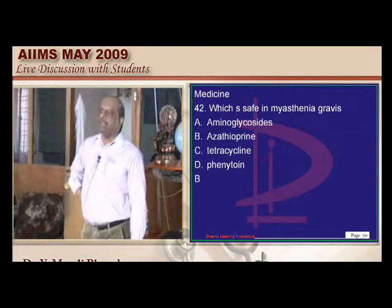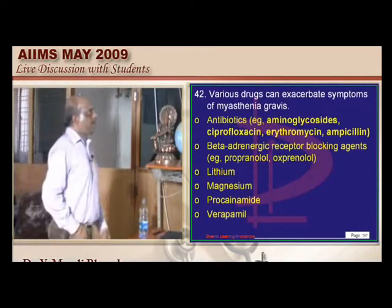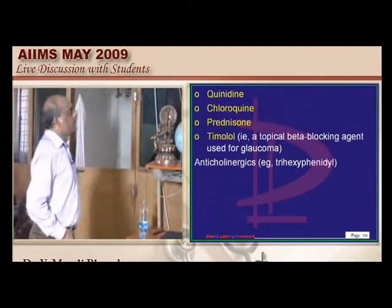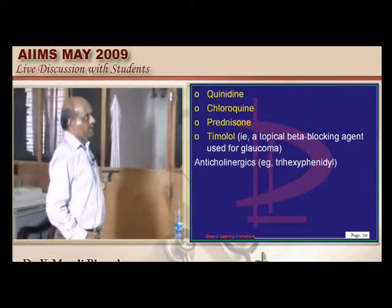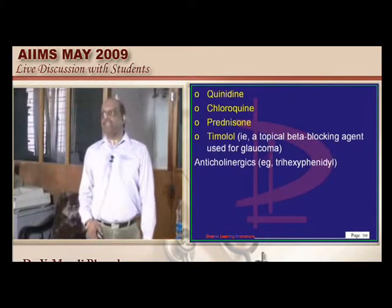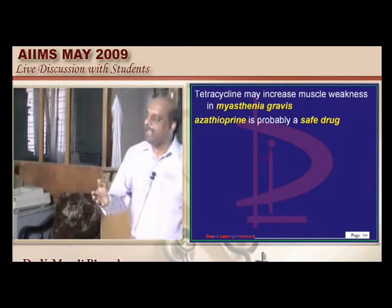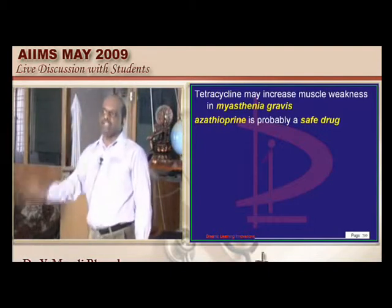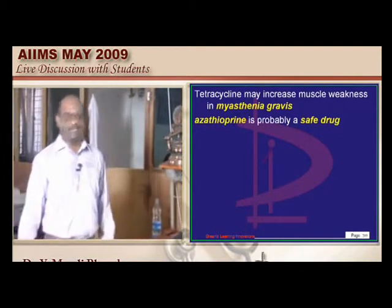Which drugs are safe and unsafe in myasthenia? Unsafe antibiotics include aminoglycosides, ciprofloxacin, erythromycin, ampicillin. Unsafe drugs also include beta-blockers like propranolol, oxyprenolol; lithium, magnesium, procainamide, verapamil, quinidine, chloroquine, prednisolone, and timolol — these can all exacerbate symptoms of myasthenia. Safe and unsafe drugs in porphyria is another standard question — book that for November 2009 AIMS.